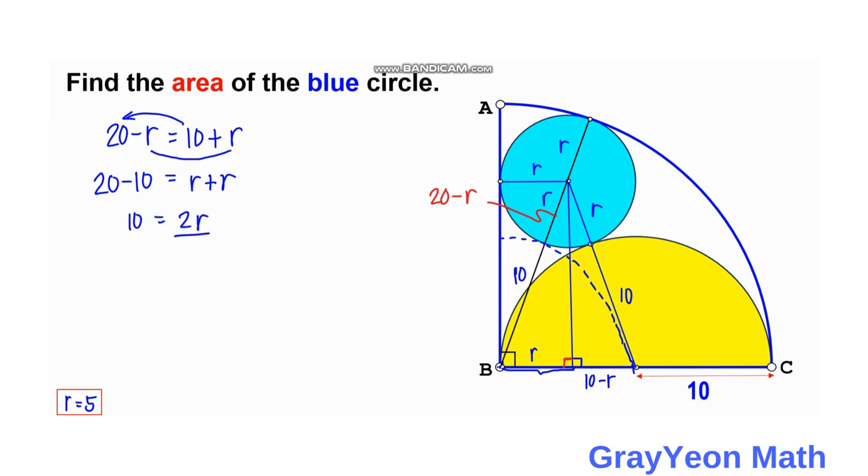So divide both sides by 2, so it gives us the value of r to be 5 units.